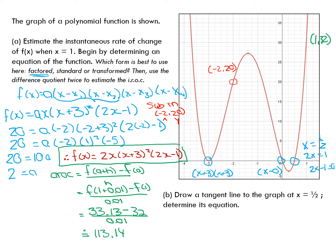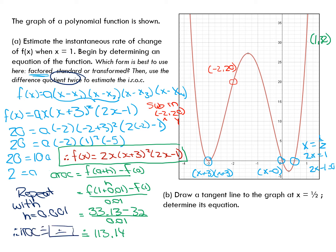Now I would repeat the process with h equals 0.001 — a squeezing interval. Do it all again and then average the two results together. Therefore, the instantaneous rate of change is approximately the average of those two numbers. It's still going to be very close to 113. So that's a review of the difference quotient.